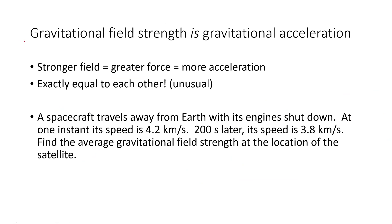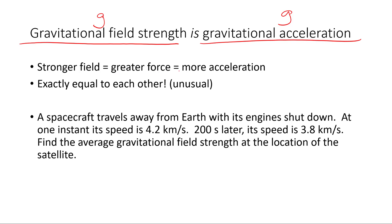You may notice that 9.79 meters per second squared is the same as gravitational acceleration on Earth. That's because gravitational field strength is the same as gravitational acceleration — they are the same value, not just the same units. Stronger field does mean greater force and more acceleration, but with gravity they are exactly equal, not merely proportional. G field strength equals gravitational acceleration, which is constant for all objects at a particular location, whether in space or on the surface of the Earth.